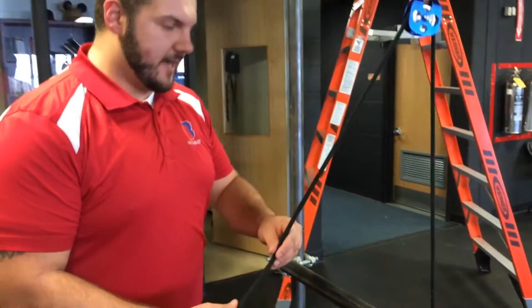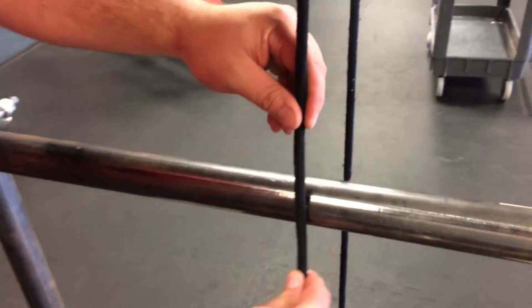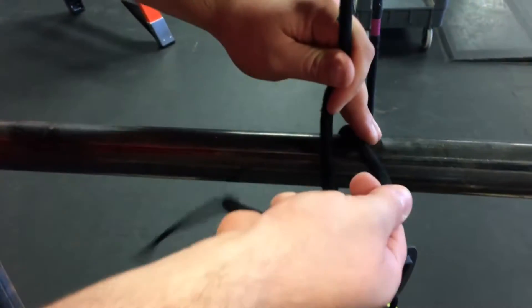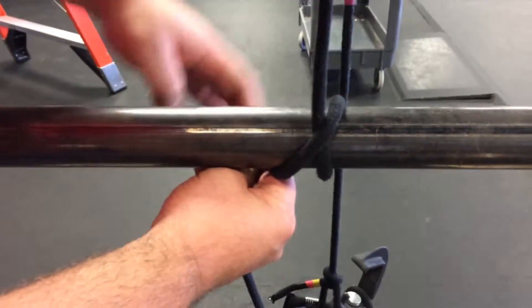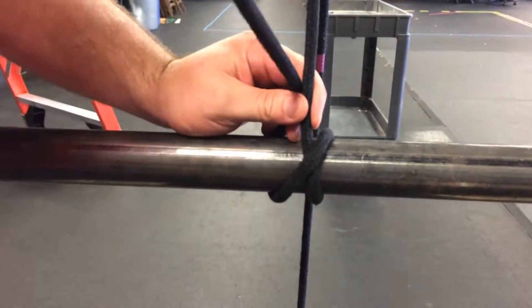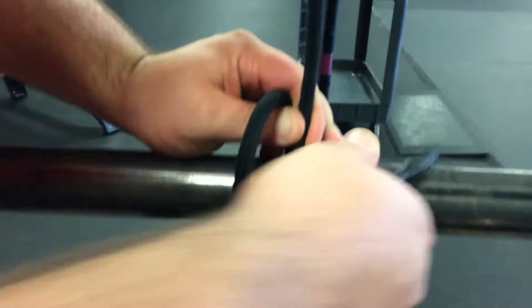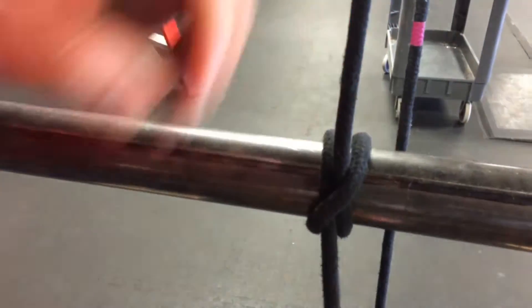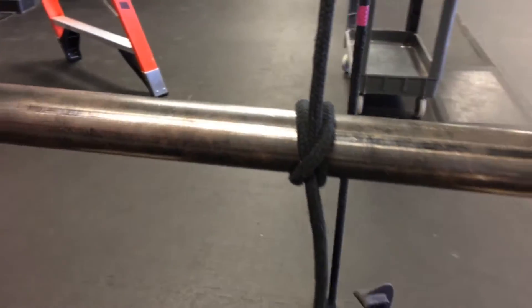Here's a closer look at our clove hitch. Come down. Up, around. You come across your existing rope. Back around, make a second cross, pull tight. That is a clove hitch.